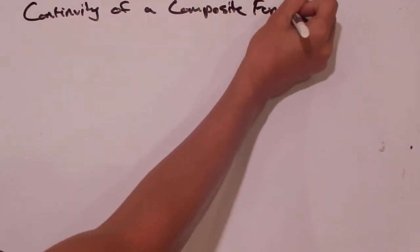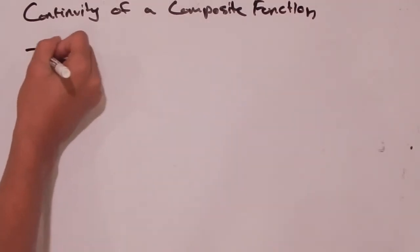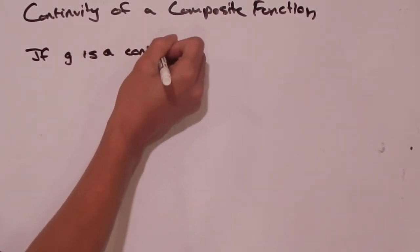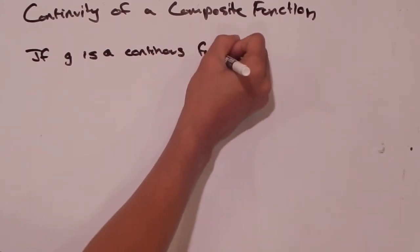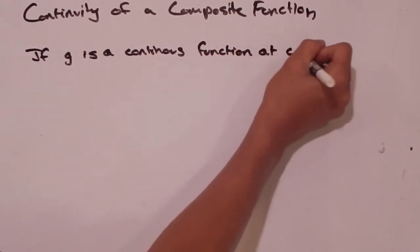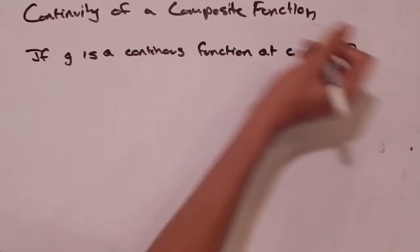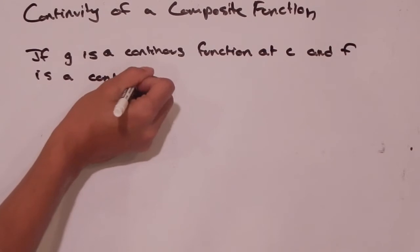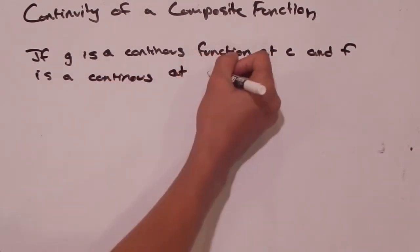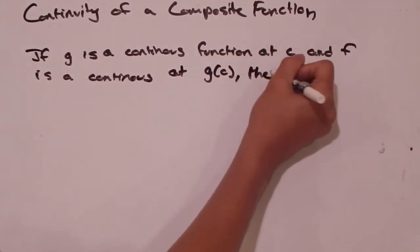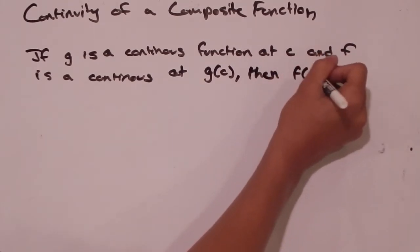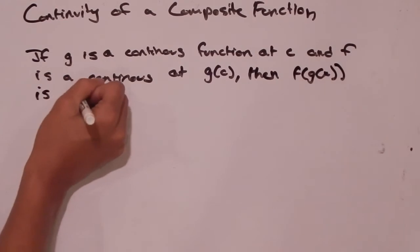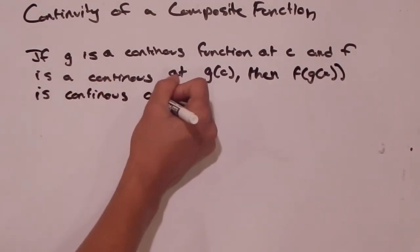So here's what we're trying to prove: that if g is a continuous function at c and f is a continuous function at g(c), then f(g(x)) is continuous at c.